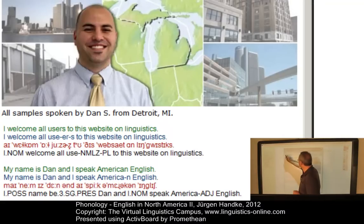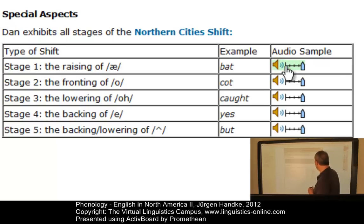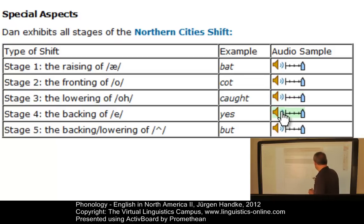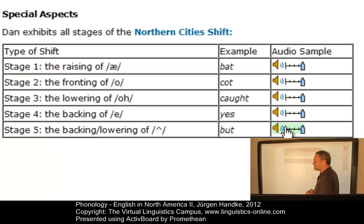Let us now listen to the stages of the Northern Cities Shift. The first stage is the raising of A to E — 'bat' shows clear-cut raising of A. Then the fronting of OR — 'cut' is very much fronted. Then the lowering of OR. Then the backing of E in words such as 'yes' — we hear 'yes.' And finally the backing and lowering of the wedge vowel as in 'but' — so 'but' shows clear backing. This is a nice example of the Northern Cities Shift.